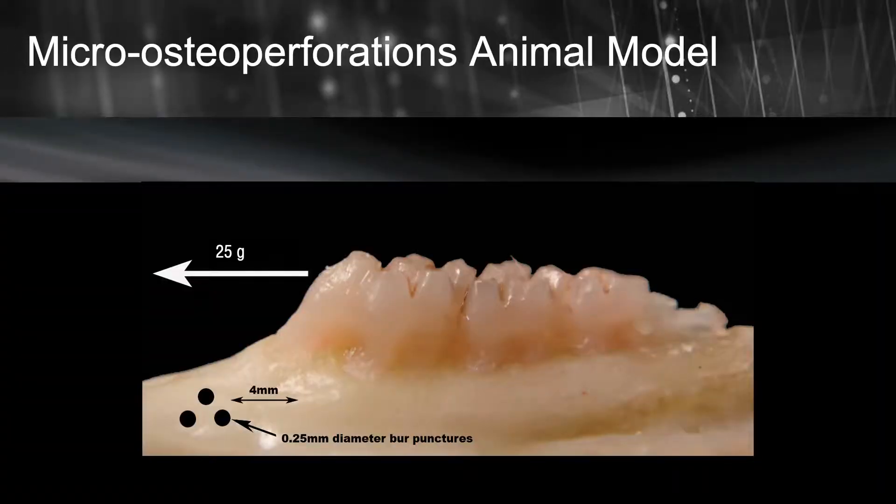Researchers at CITUR Academy decided that if we apply a direct trauma to the bone, we should be able to bypass the saturation point. Let's do an experiment: assume we take a group of rats and apply a small perforation inside the bone in the direction of orthodontic tooth movement, while at the same time applying orthodontic forces.